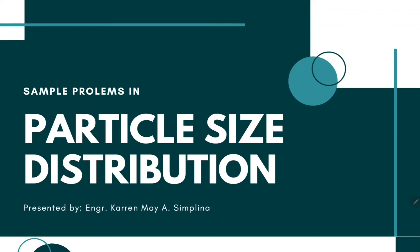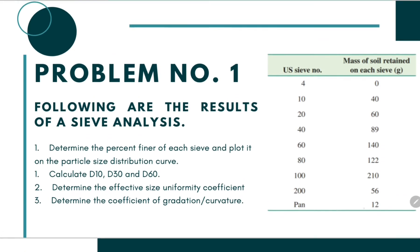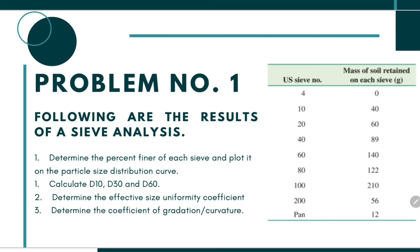Sample problems in particle size distribution in relation to mechanical analysis of soil, particularly sieve analysis. Following are the results of a sieve analysis. We are asked to determine the percent finer of each sieve and plot it on the particle size distribution curve. Secondly, we will calculate D10, D30, and D60.